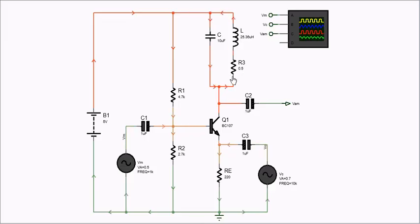The transistor is configured in a common emitter amplifier setup. Biasing is achieved through a voltage divider using resistor R1 with a value of 4.7 kΩ, and resistor R2 with a value of 2.7 kΩ at the base, and resistor RE with a value of 220 Ω stabilizes the emitter.